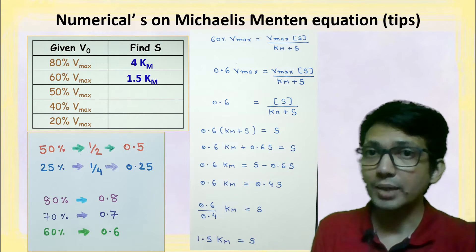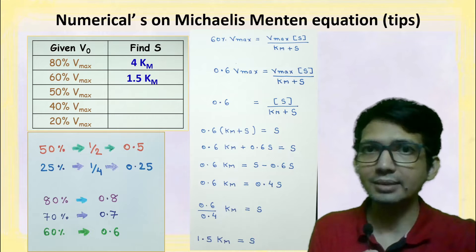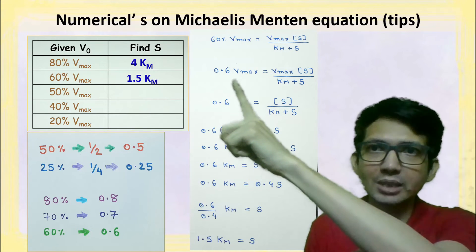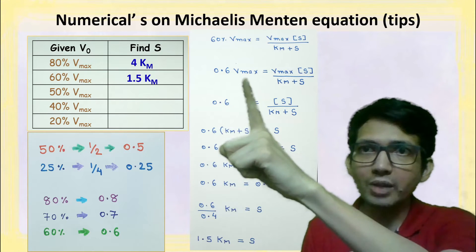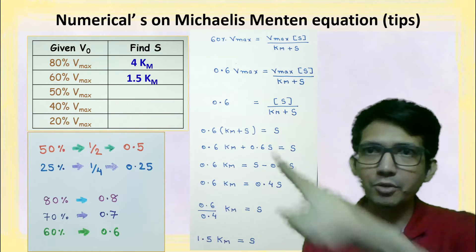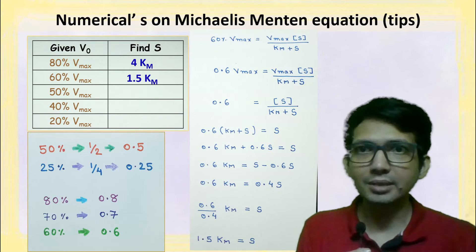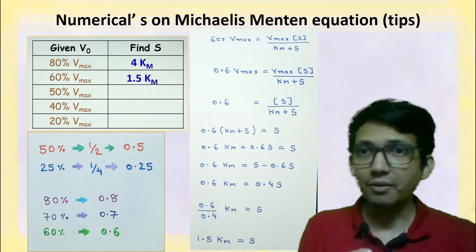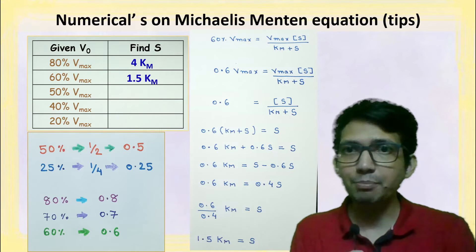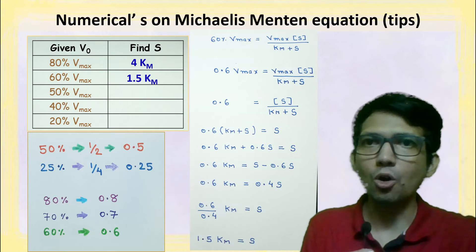Now let's calculate the case where velocity is 60 percent of vmax. v0 is replaced by 0.6 vmax. Solving this gives us 1.5 km equals s. This means if the substrate concentration is 1.5 times the value of km, then the velocity will be 60 percent of vmax.